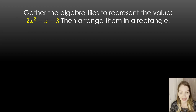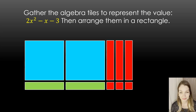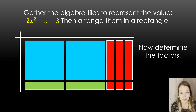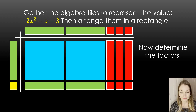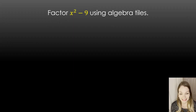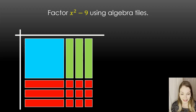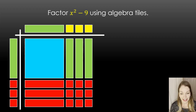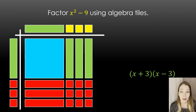Try this one: 2x squared minus x minus 3. Again, we had to add zero pairs — some positive x's and negative x's — to get the rectangle to work, but we did not change the value. The factors are 2x minus 3 and x plus 1. Now let's try this one — this is always a fun one to show students. We had to get three positive x's and three negative x's to make this work. This is what we know as the difference of squares. It's a pattern that students will probably pick up on after doing it a few times, but here they get to see how it all works.